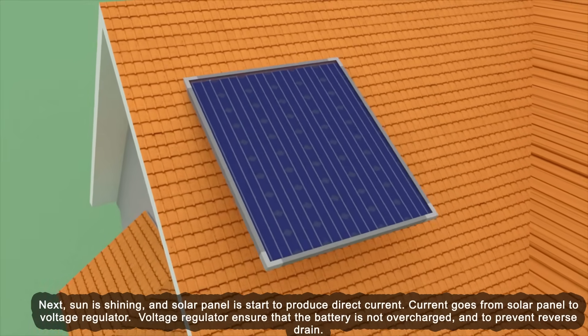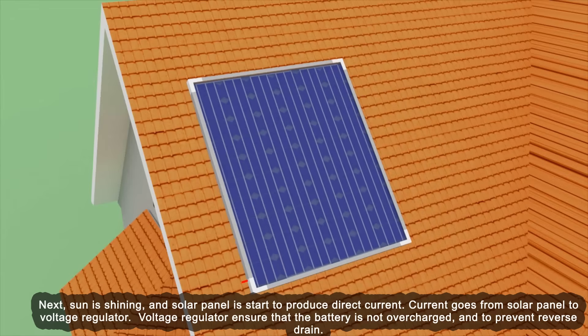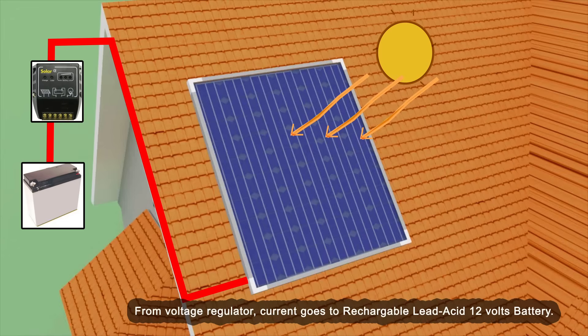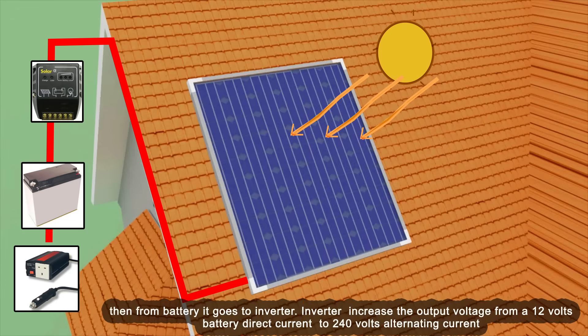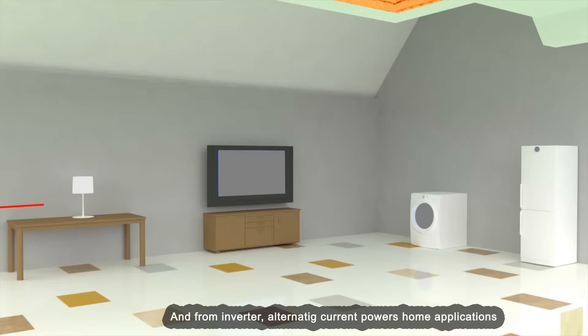The sun is shining and solar panels start to produce direct current. Current goes from the solar panel to a voltage regulator. The voltage regulator ensures that the battery is not overcharged and prevents reverse drain. From the voltage regulator, current goes to a rechargeable lead acid 12-volt battery. Then from the battery it goes to an inverter. The inverter increases the output voltage from a 12-volt battery direct current to 240 volts alternating current, and from the inverter, alternating current powers home applications.